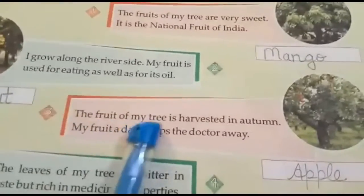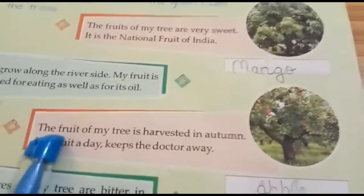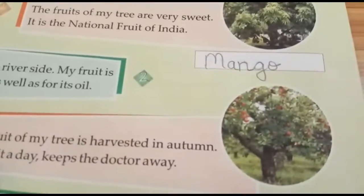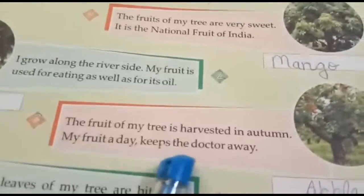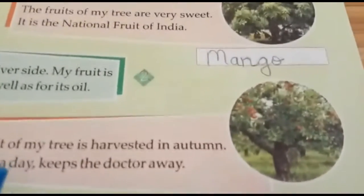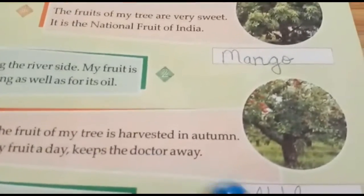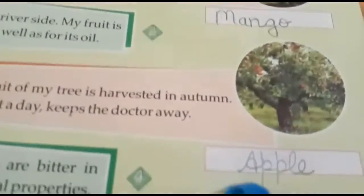Third: the fruit of my tree is harvested in autumn. My fruit a day keeps the doctor away. You have heard the saying — an apple a day keeps the doctor away. If we eat an apple each day, we stay away from the doctor. The answer is apple.